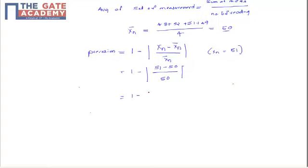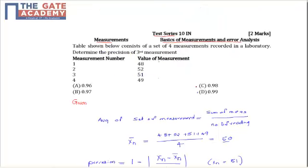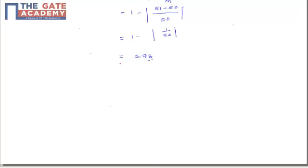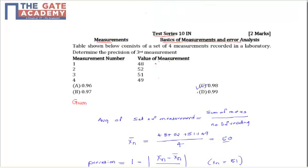So: precision = 1 minus |51 minus 50| divided by 50 = 1 minus 1/50. After solving, the value of precision is equal to 0.98, which is option C. The precision at the measurement 51 is 0.98. In this session we have studied how to calculate the value of precision for a given measurement. Thank you.